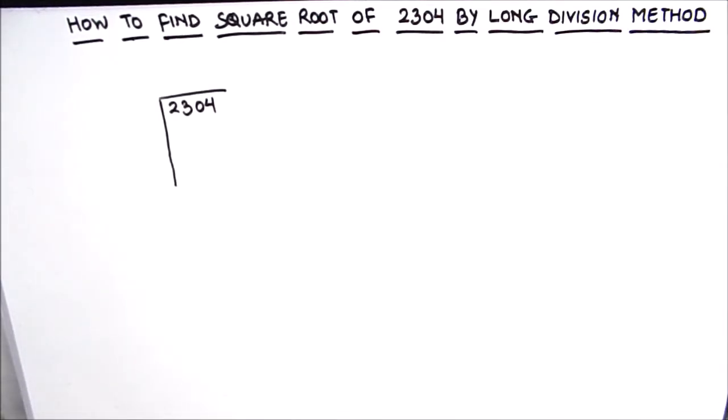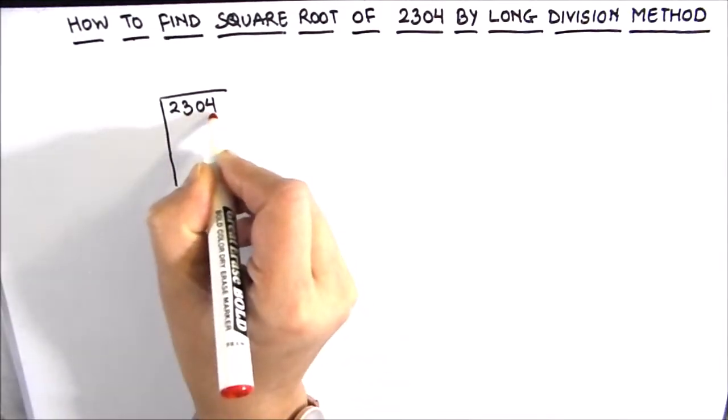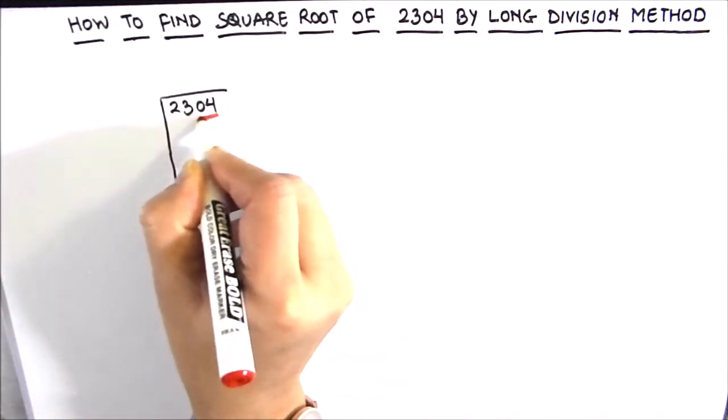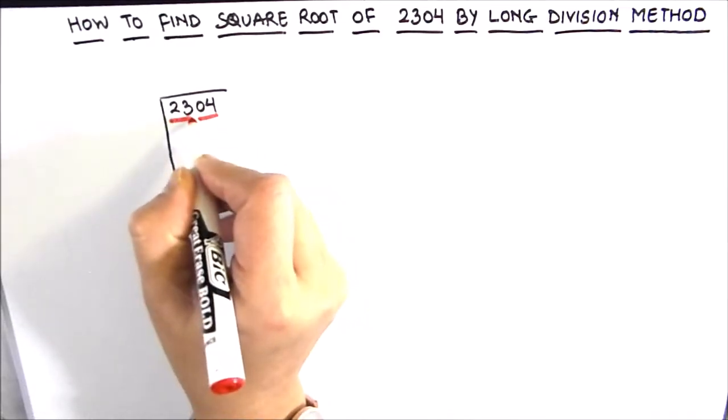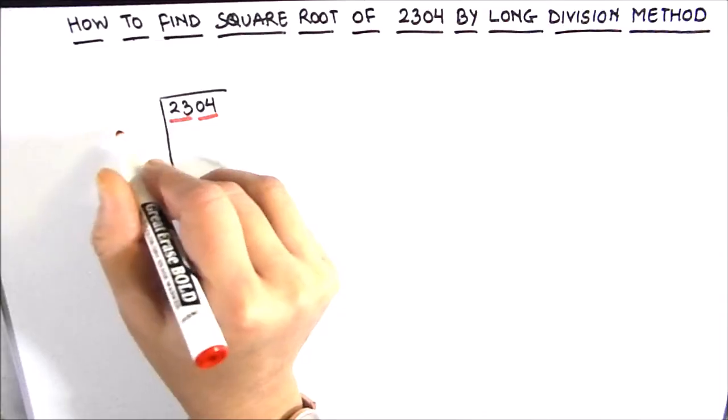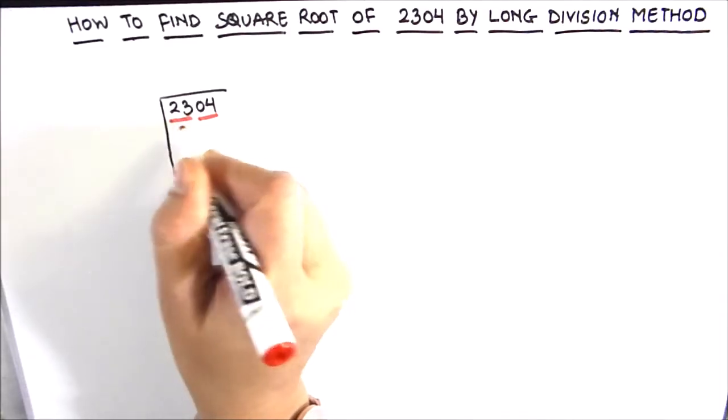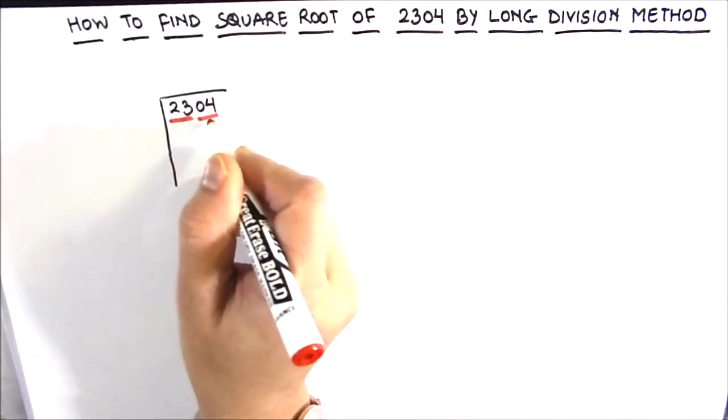The first step in finding the square root using the long division method is to group the digits in pairs starting with the digit in the units place. Each pair and the remaining digit if any is called a period. So here we will start by grouping the numbers from the units place. This is our first group 04 and the other group is 23. We do not have any leftover number, so we have only two groups 23 and 04.